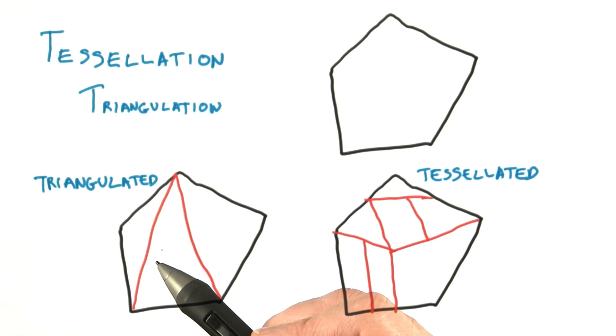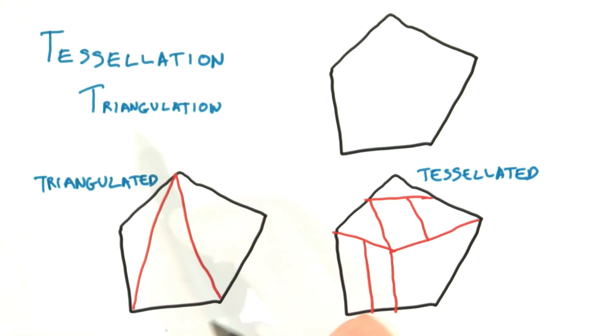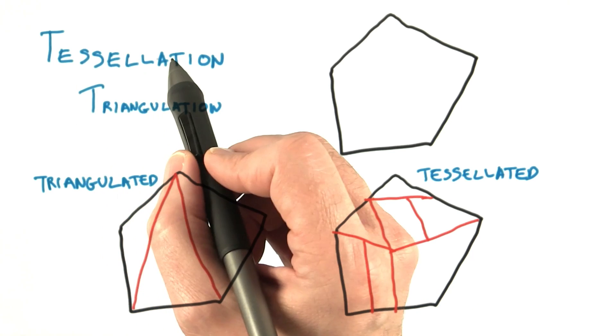Usually, we use the existing vertices of the polygon when performing triangulation. The major rule is that when we add an edge, it has to be entirely inside the polygon. Triangulation is a particular form of tessellation.